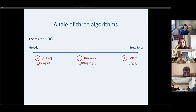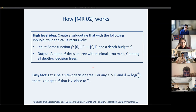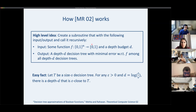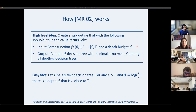The high-level idea of MR is a subroutine with a strong guarantee: given query access to f and a depth budget D, output the best possible depth-D decision tree — one with minimal error among all depth-D trees. This is a very strong guarantee, but we can show recursively with an almost self-writing inductive proof that it can be satisfied.